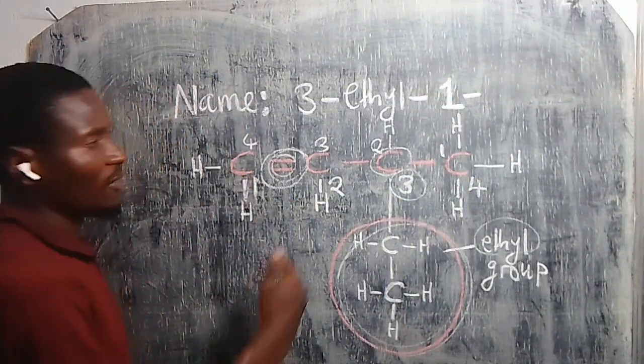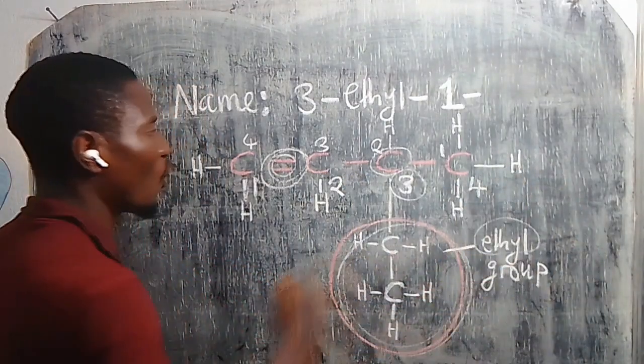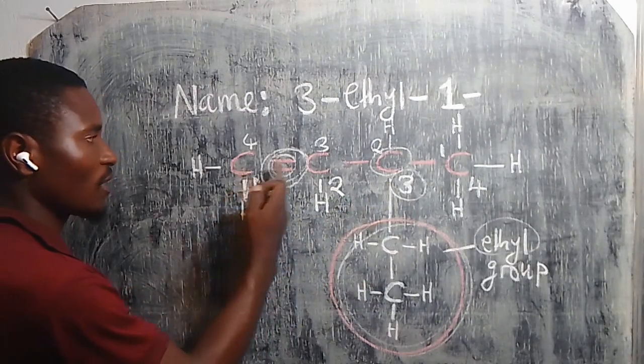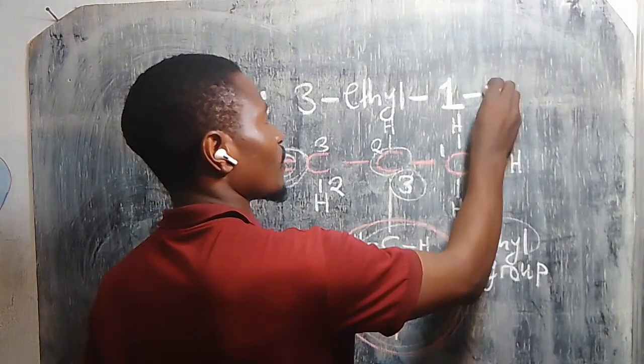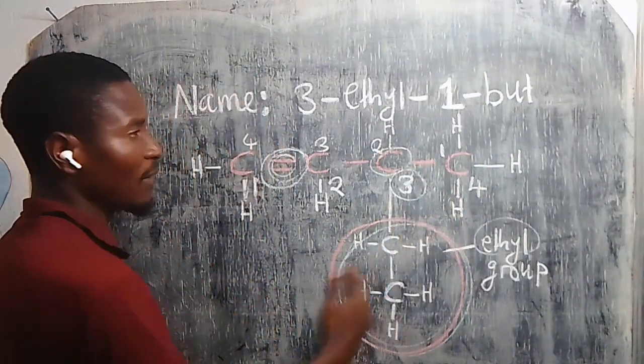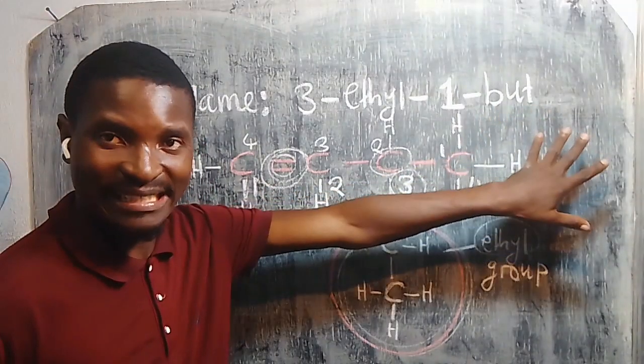Dash, and then you count the number of carbons in the unbranched hydrocarbon. One, two, three, four. So the hydrocarbon with four carbons is called butane.